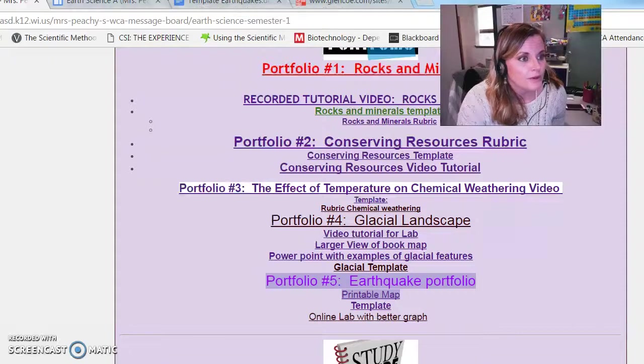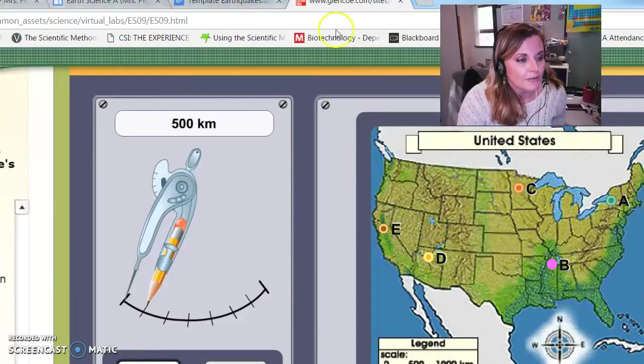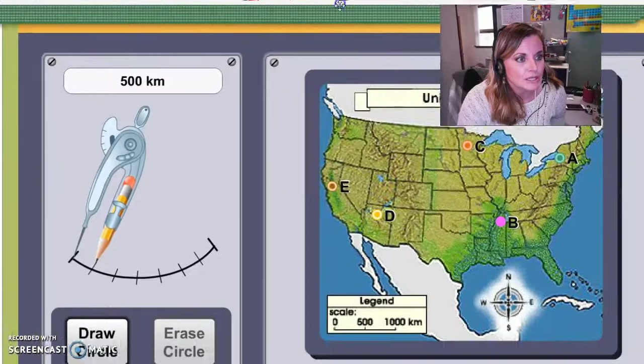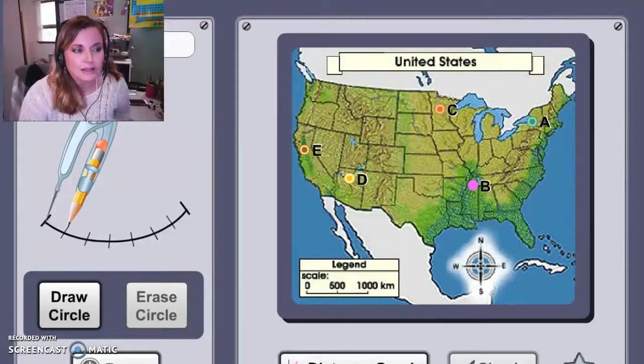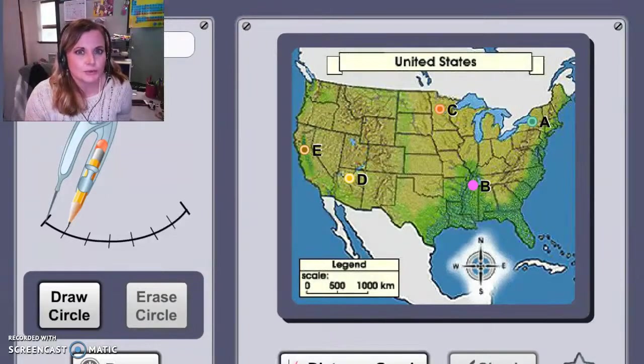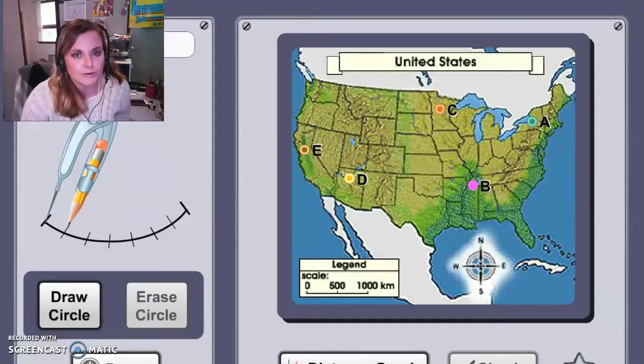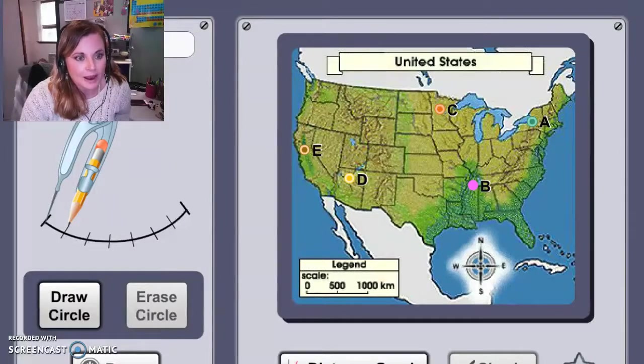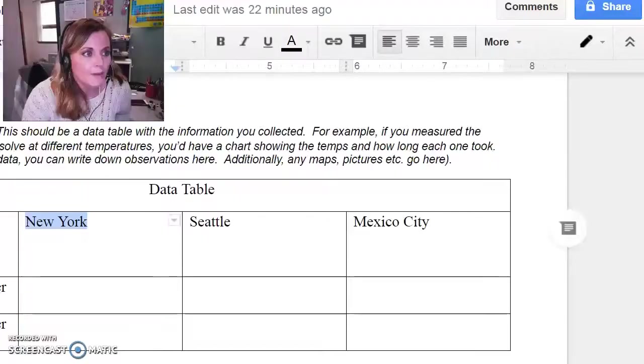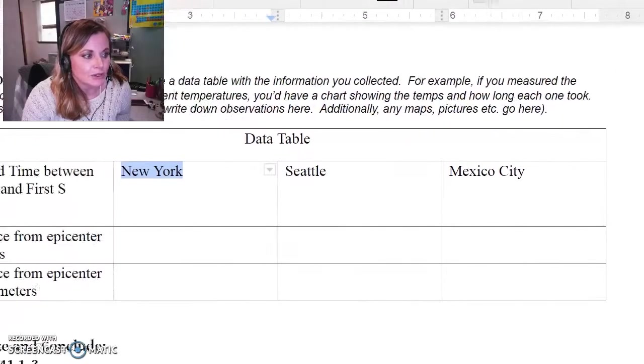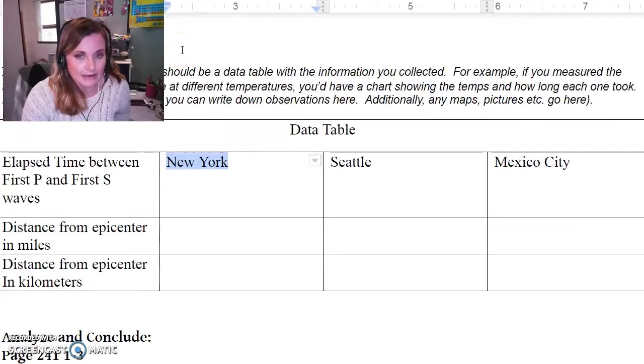So let's go to the online lab with better graph and that brings you to this. This is a Glencoe lab that does essentially the same thing as your book, but everything's online so you don't have to do any of it on pencil and paper. It works out a lot better and it's a lot more accurate. However, there are different cities here that are mentioned in the textbook. When you open the template, it's going to show you three different cities: New York City, Seattle, and Mexico City.